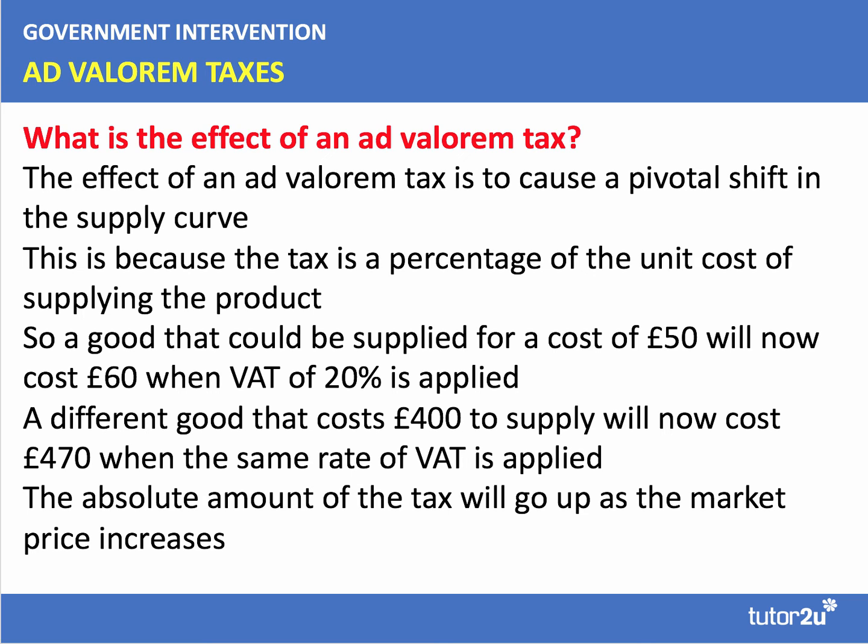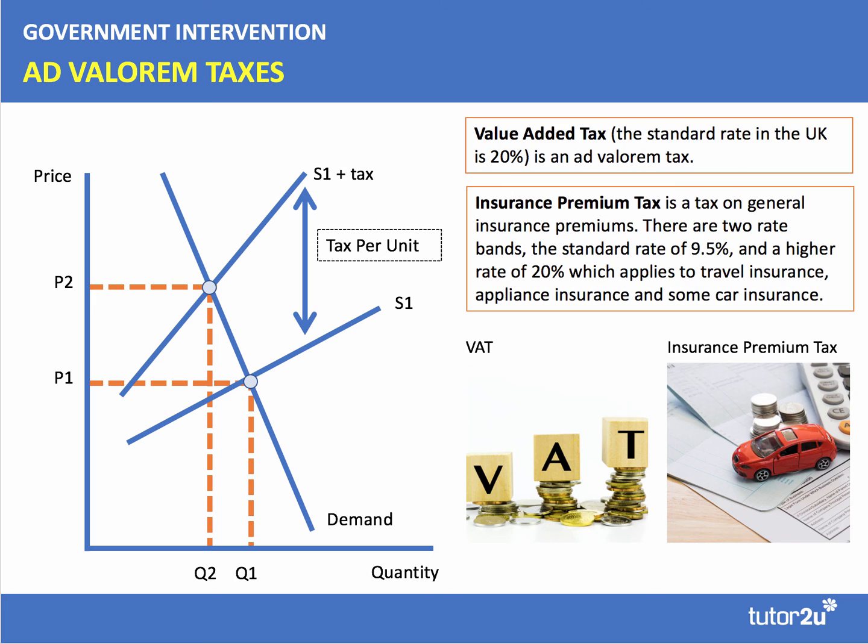We've looked at a specific tax. There is another type called an ad valorem tax, which is a percentage of the unit cost of supplying the product. Take VAT at 20% as an example: if a good costs £50 to supply, we add 20% — that's £10 — lifting it to £60. A product that costs £400 to supply would have £80 of VAT added. So with an ad valorem tax, the absolute amount of the tax increases as the market price increases.